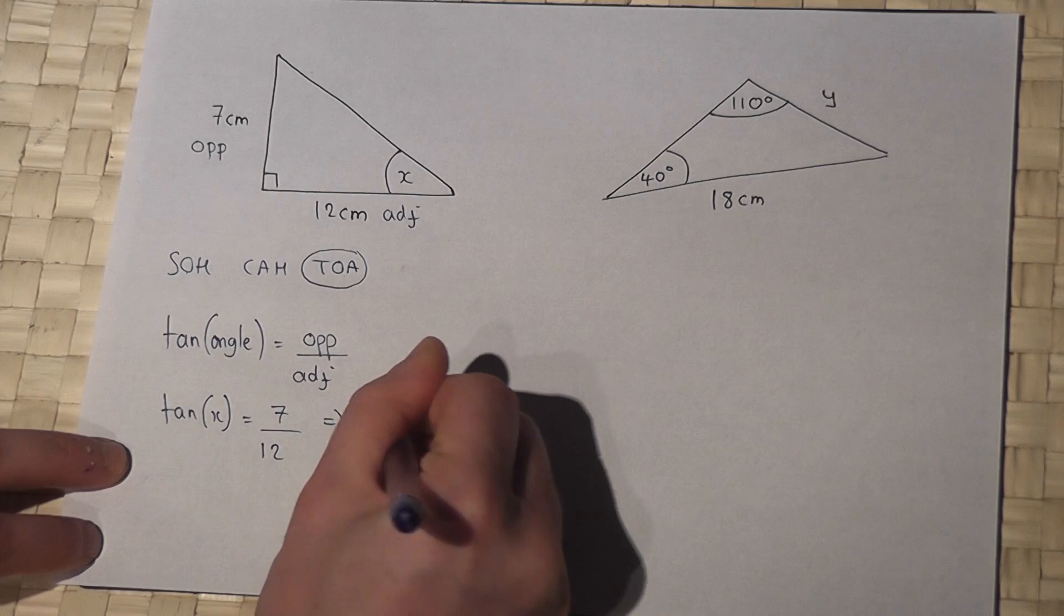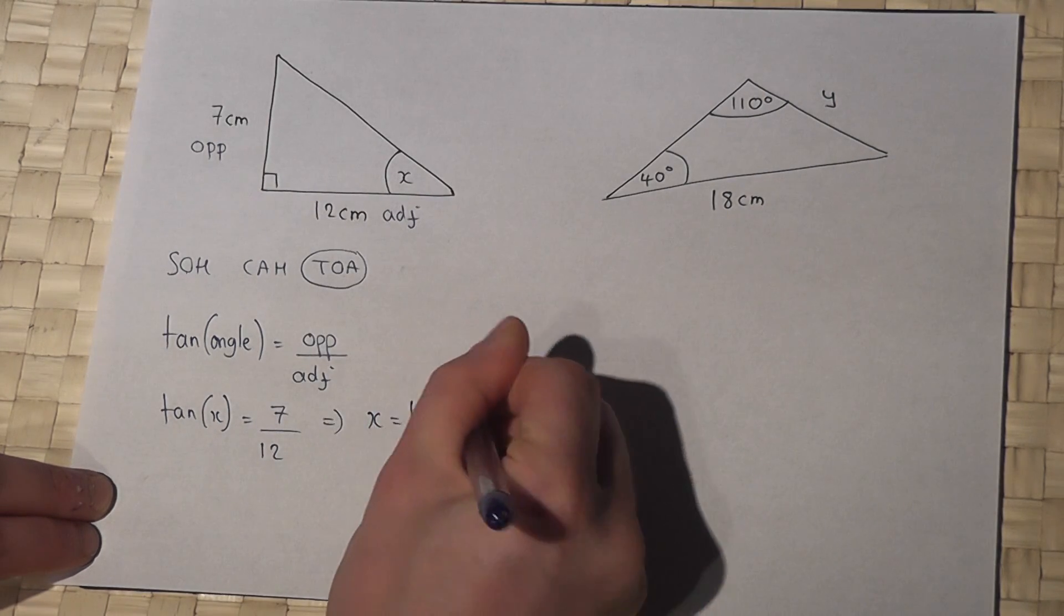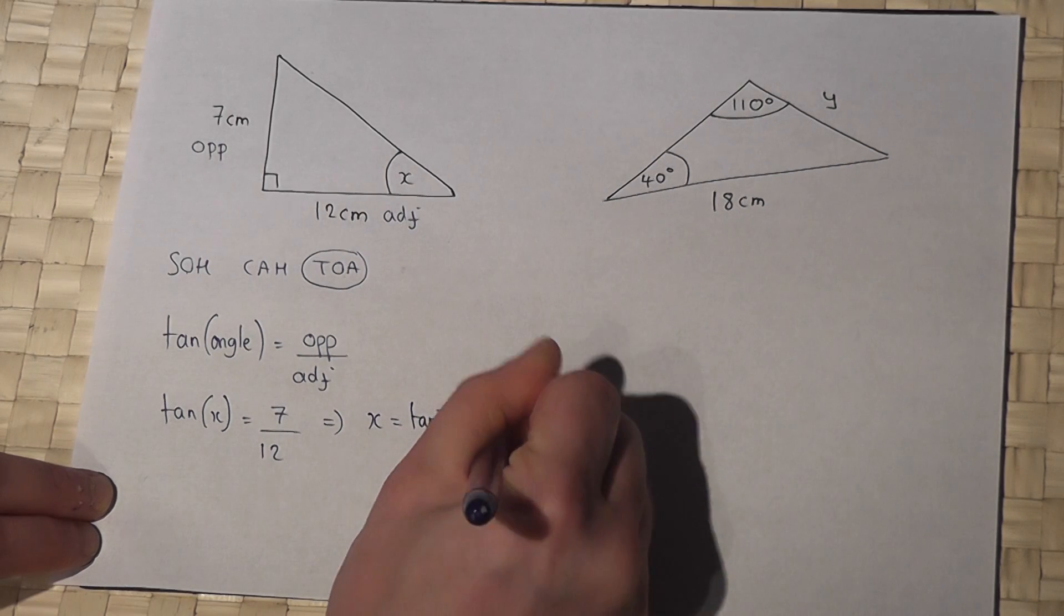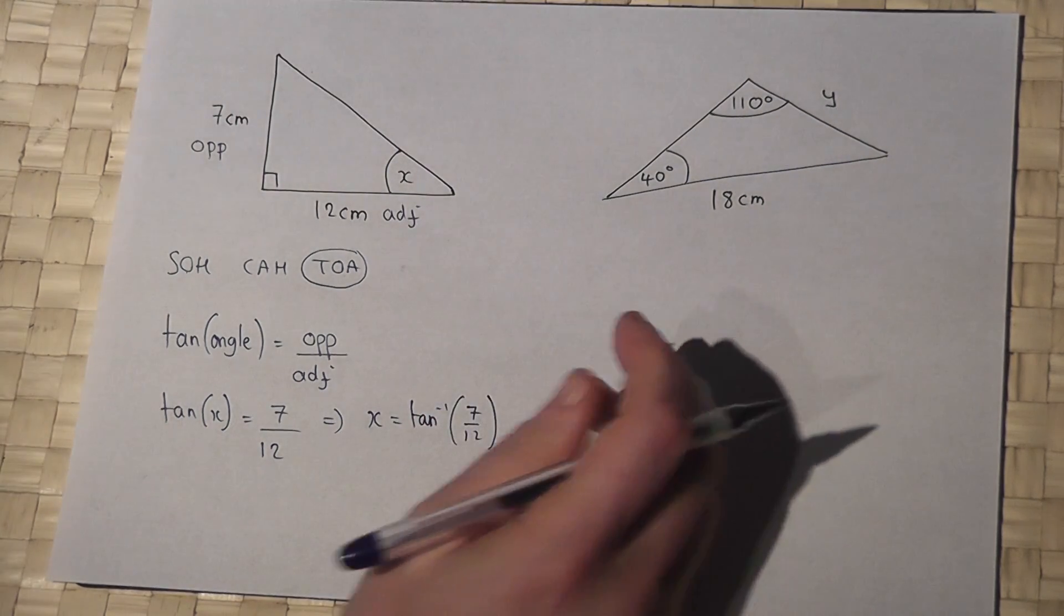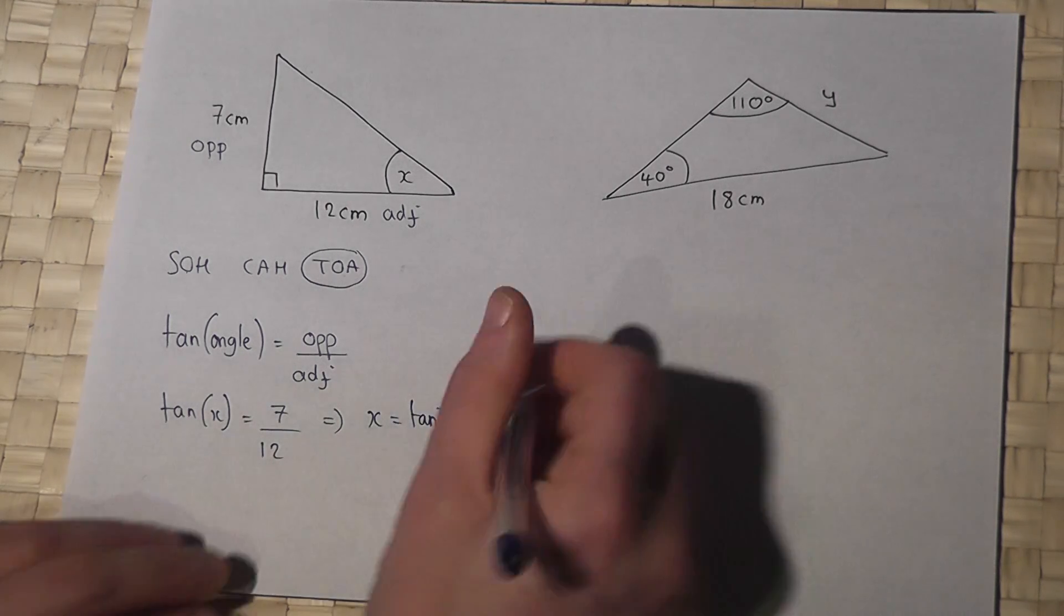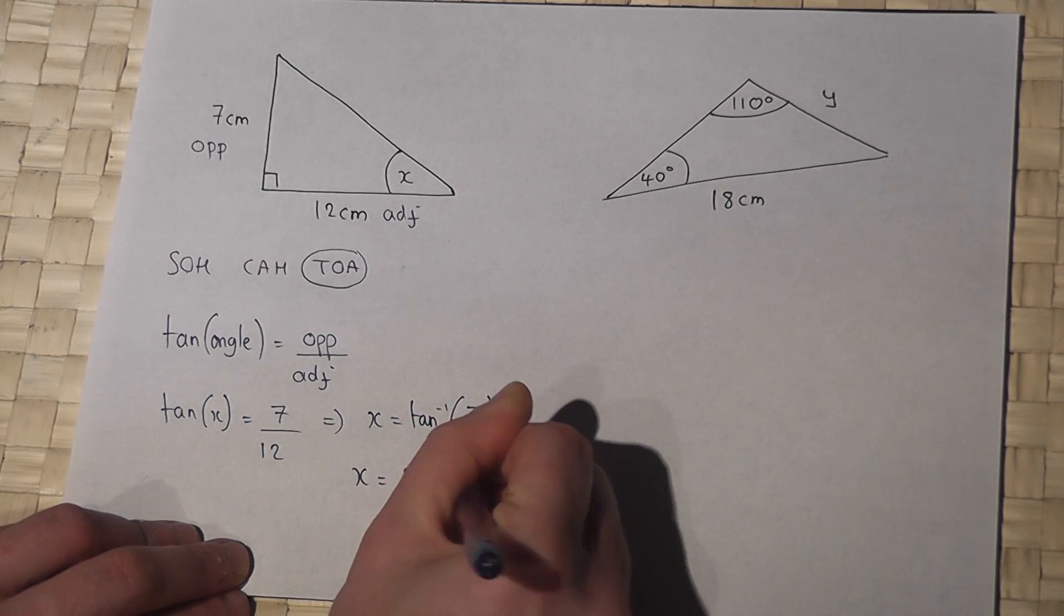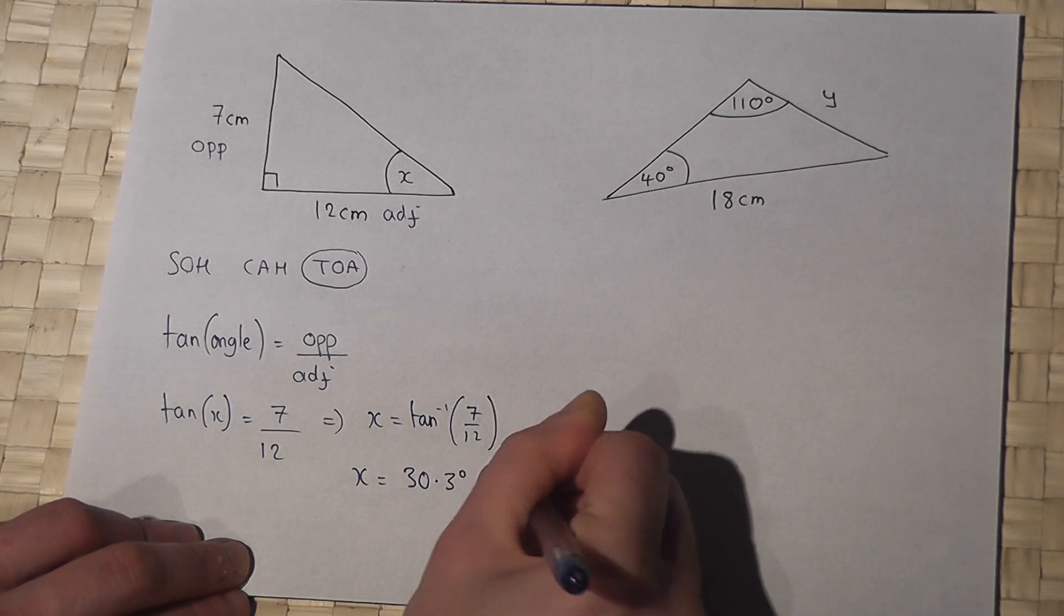So to find x I have to do inverse tan, so tan to the minus one of seven over twelve. So I enter that into my calculator, shift tan to get inverse tan, seven divided by twelve, and from that I get x is equal to 30.3 degrees to three s f.